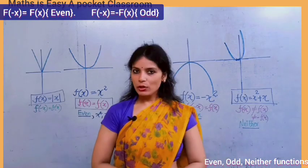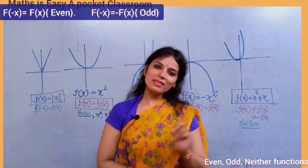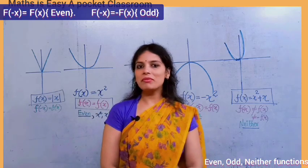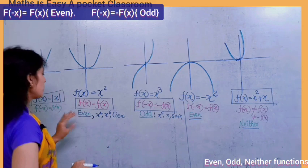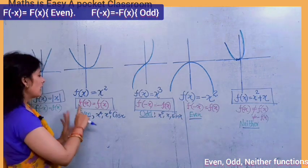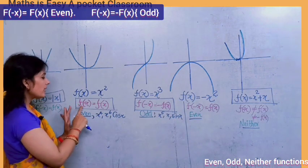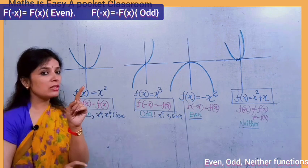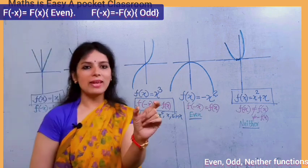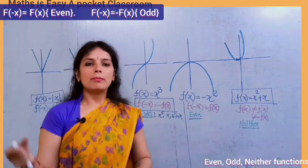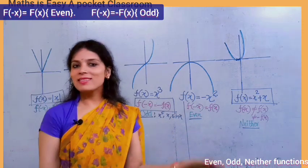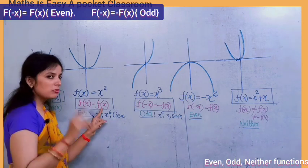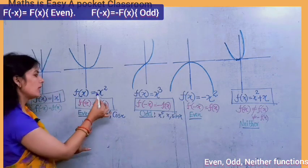But that is just the geometric definition. In order to prove mathematically that a function is even or odd, we should know the basic definition. The basic definition of an even function is: a function f where f(−x) = f(x). This means the function remains unchanged when x is replaced by negative x. A function that remains unchanged by putting x equal to minus x is called an even function.